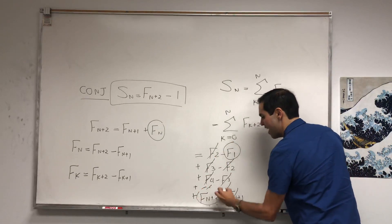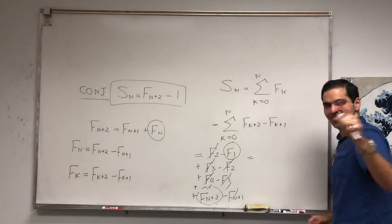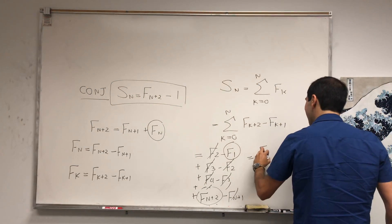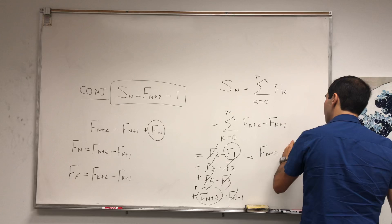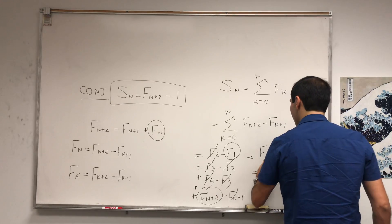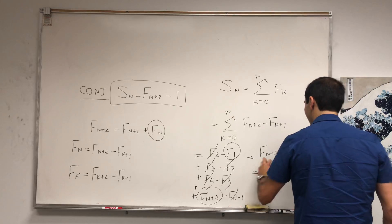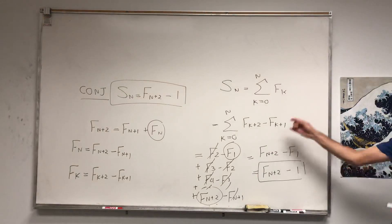So you cancel out, you cancel out, everyone cancels out, and we end up with Fn+2 minus F1. But remember, F1 was just 1, so Fn+2 minus 1. How cool is that? Without even doing any induction proof or crazy calculation, we get this nice formula for the sum of Fibonaccis.